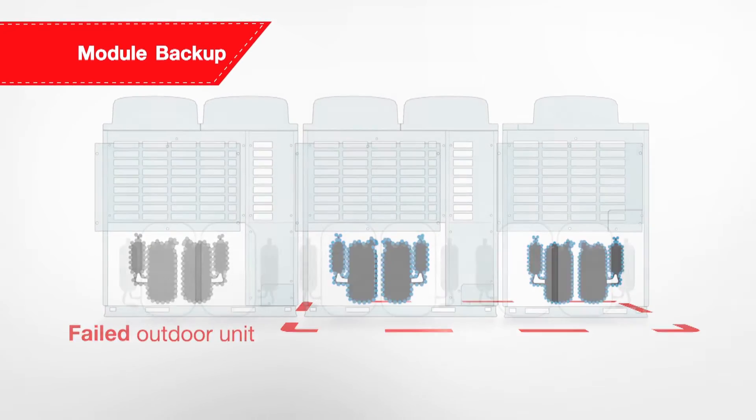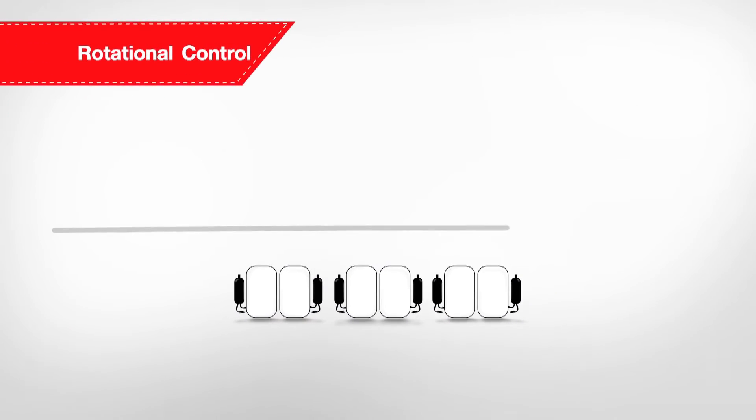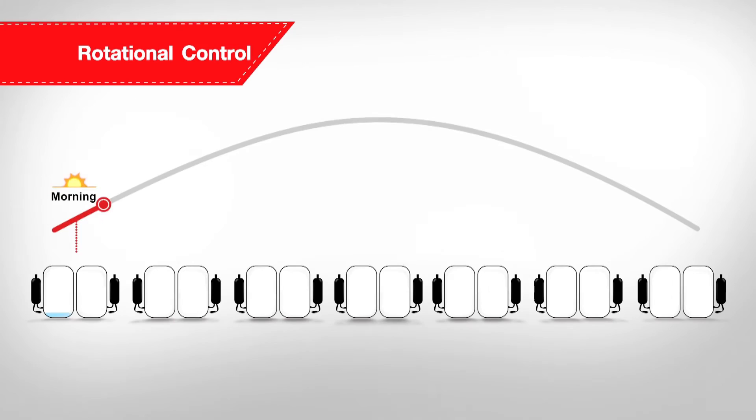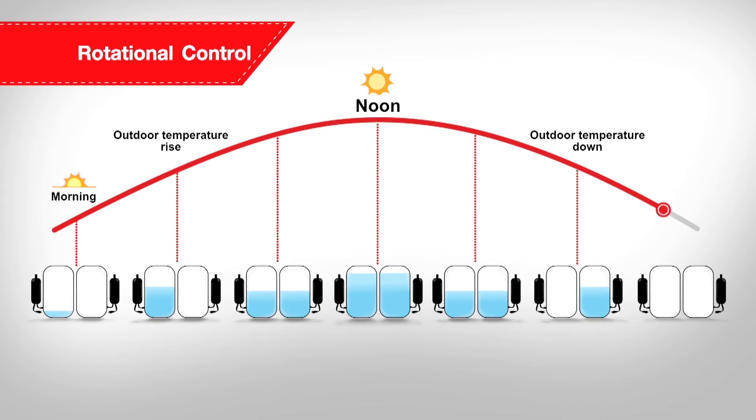The SMM-SE also comes with rotational control designed to maximize both reliability and energy efficiency. It adjusts the individual operation of each compressor to work harmoniously under variable outdoor conditions.